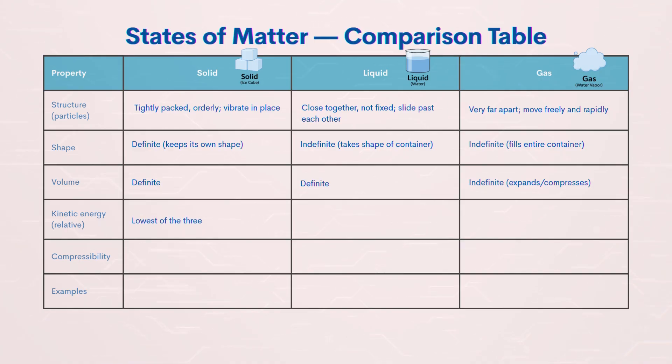Kinetic energy: In solids like ice, particles have the least kinetic energy. In liquids like water, particles have more energy and can move around each other. In gases like water vapor, particles have the most kinetic energy and move rapidly.